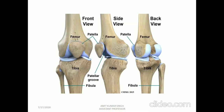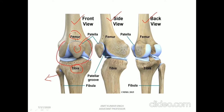Coming to the knee complex part one. Here you can see different views of the knee complex — the front view, side view, and posterior view. In the front view, this is the tibia bone at the bottom, the femur on top, and this is the patella bone. Here we also have another bone known as the fibula. When discussing the knee complex, remember that the fibula does not contribute to the knee joint. We have two main joints: the tibiofemoral joint between tibia and femur, and the patellofemoral joint.